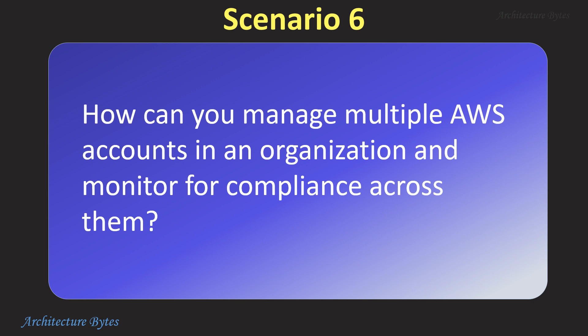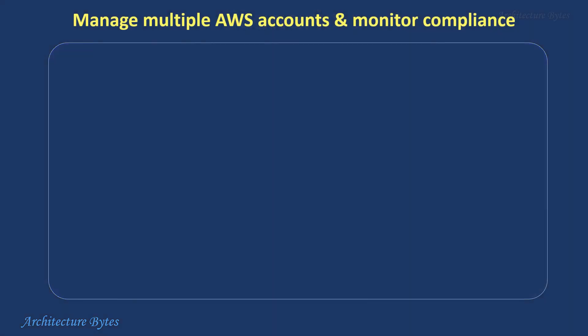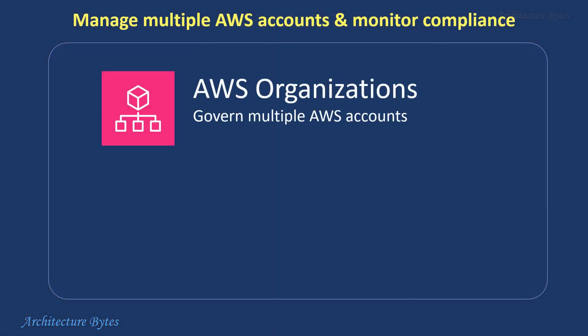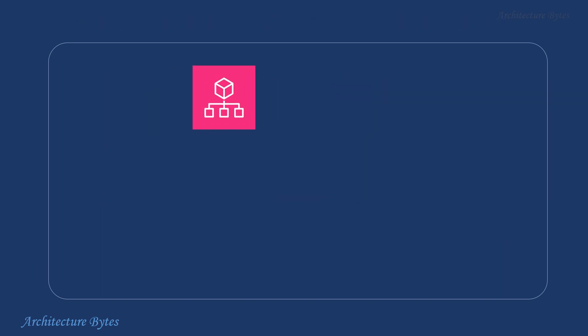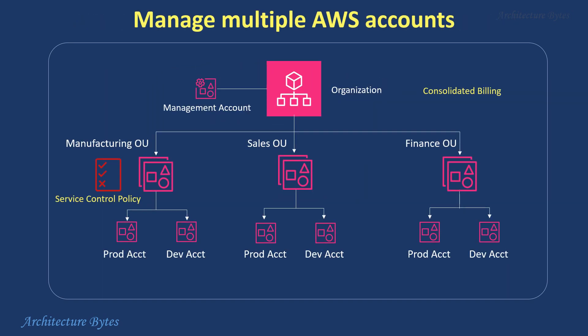How can you manage multiple AWS accounts in an organization and monitor for compliance across them? Use AWS Organizations for account management and AWS Config for compliance tracking. AWS Organizations is a service that enables you to centrally manage and govern your AWS environment across multiple AWS accounts using organizational units, service control policies and consolidation.